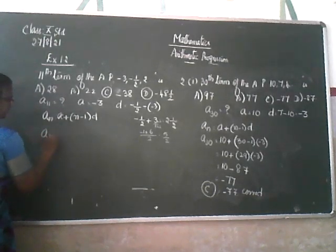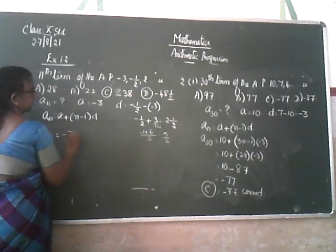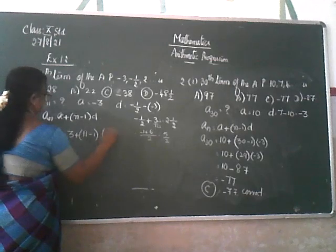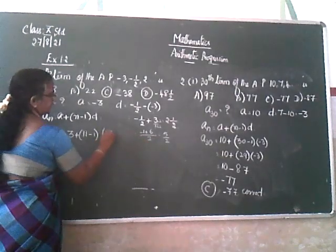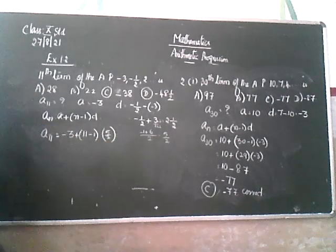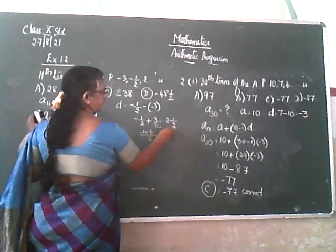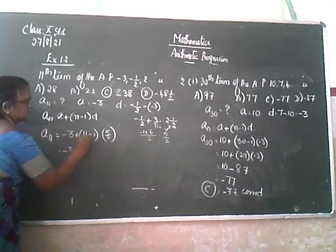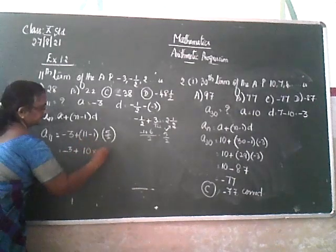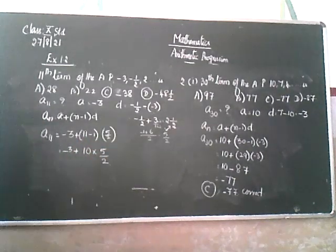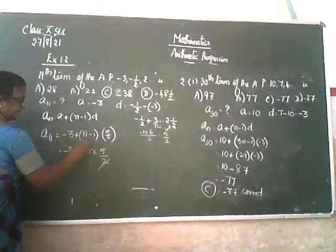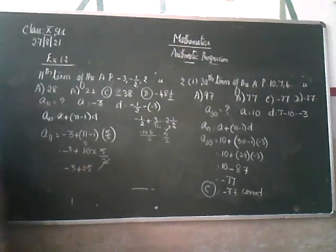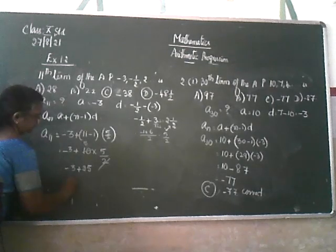So the 11th term: A is minus 3, plus 11 minus 1 is 10, into D which is 5 by 2. So minus 3 plus 10 into 5 by 2 — two 5's are 10, five 5's are 25. So minus 3 plus 25 is 22. So A11 is 22, which is the correct answer.